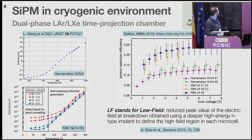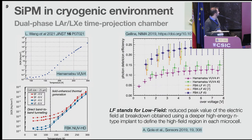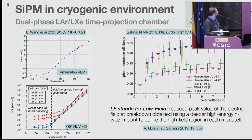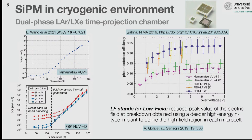Regarding SiPM performance in cryogenic environments: at room temperature, dark count rate for SiPMs is a killer — you need to reach below 1 Hz/mm². This is achieved at very low temperature. Here you see Hamamatsu VUV4 and FBK NUV-HD sensors. FBK did R&D showing that by decreasing the peak electric field, you can reduce the dark count rate by two orders of magnitude at very low temperature.